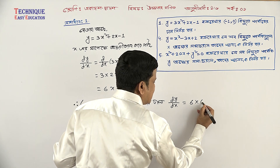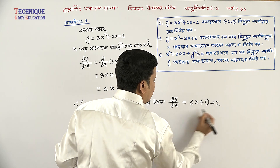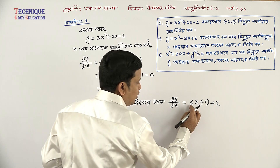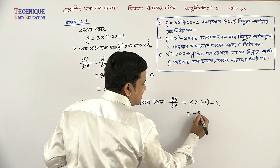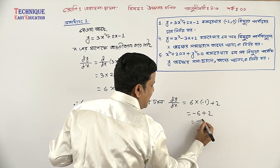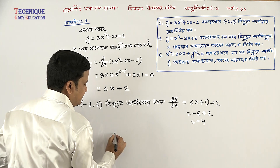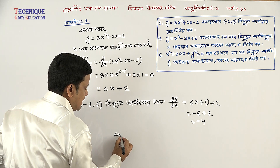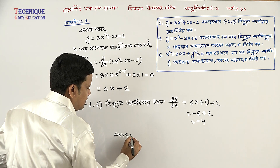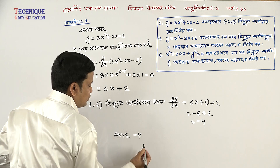Six into minus one, that gives minus six, plus two. So it's still possible minus six plus two. So the answer is minus four. It's still possible minus four.